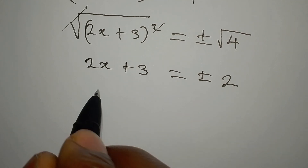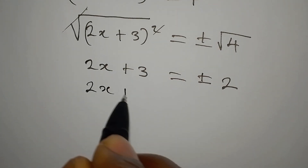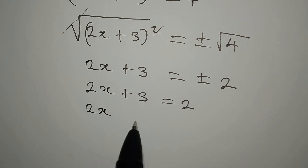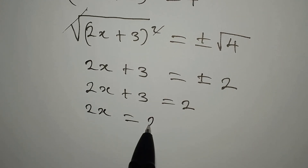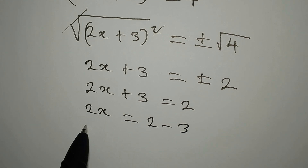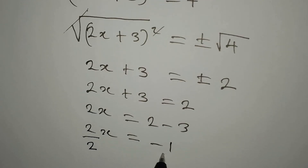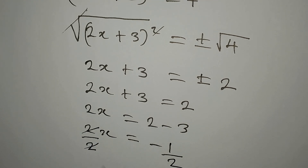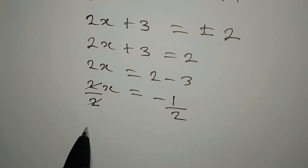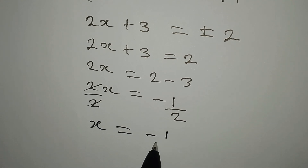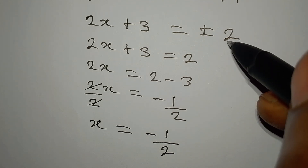This gives us two solutions. Working with the positive first: 2x + 3 = 2, so 2x = 2 minus 3, which gives 2x = -1. Dividing both sides by 2, x is equal to negative 1 over 2.